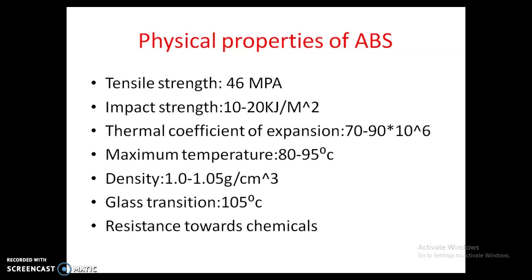Now I want to tell you the physical properties of ABS. It has a tensile strength of 46 MPa — tensile strength being the maximum stress a material can bear before failure; 1 MPa is equal to 10 bar. Impact strength of 10 to 20 kJ per meter square. Thermal coefficient of expansion of 70 to 90 times 10 to the power of minus 6 — meaning it is the tendency of a material to change its shape, area, or volume in response to temperature. Maximum temperature range of 80 to 95 degrees Celsius. Density of 1 to 1.05 gram per centimeter cube. Glass transition or melting point temperature range of 105 degrees Celsius. And resistance to various chemicals.